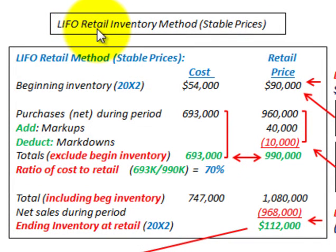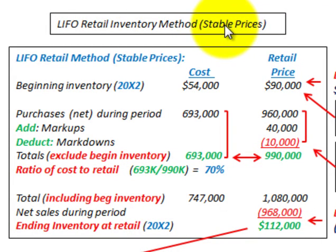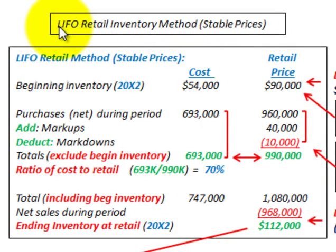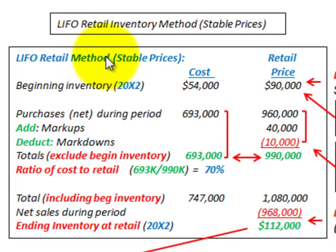What we're going to be looking at here is the LIFO retail inventory method with stable prices — no price increases or decreases for the period. LIFO means last in, first out: the most recent purchases are sold first. We're going to be looking at a retail operation, so let's look at our example here.